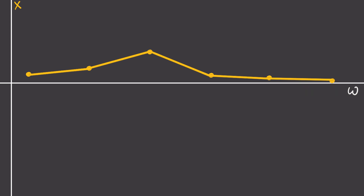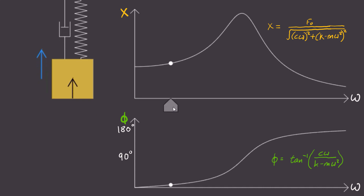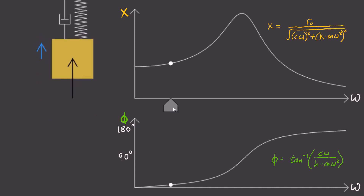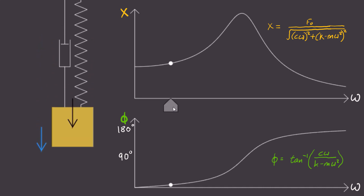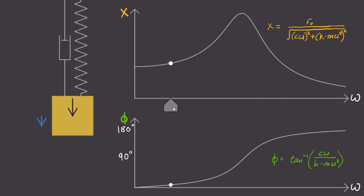But plotting the formula is one thing. Gaining intuition as to why this happens is another. For that, we'll need to look at the steady state phase phi, which is a constant that only varies between 0 and 180 degrees. Let's drive our system at a low frequency again, and show the displacement vector in black. Notice how synced up the driving force is with our displacement.